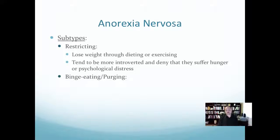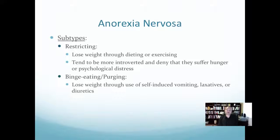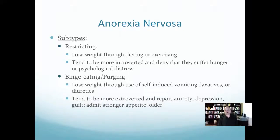The second subtype is binge eating or purging — not to be confused with bulimia nervosa. They lose weight through self-induced vomiting, laxatives, or diuretics. The focus of anorexia nervosa is to lose weight. These individuals tend to be more extroverted, report anxiety, depression, and guilt, admit having a stronger appetite, and tend to be older than those in the restricting subtype.